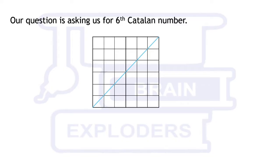Our question is asking us for the 6th Catalan number. Catalan numbers are used in many problems of combinatorics, and here they are used where we have to reach from (0,0) to (n,n) in general. Since n is equal to 6, the question is asking for C6, the 6th Catalan number.